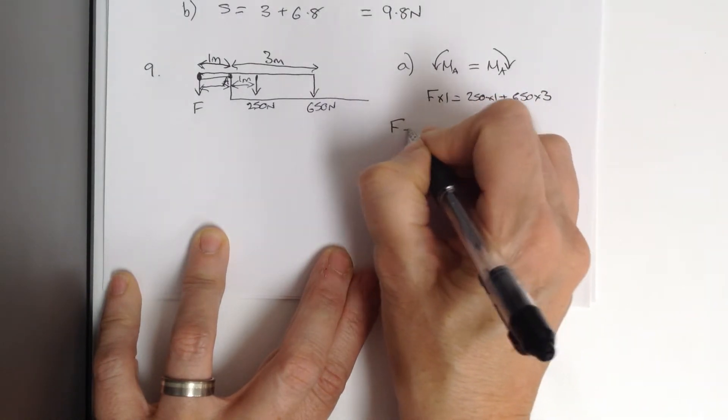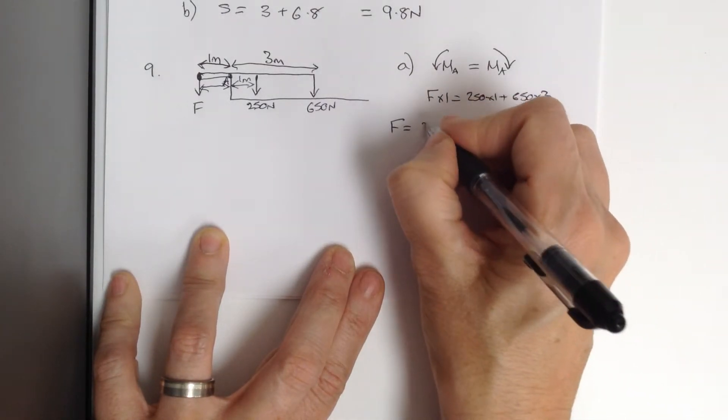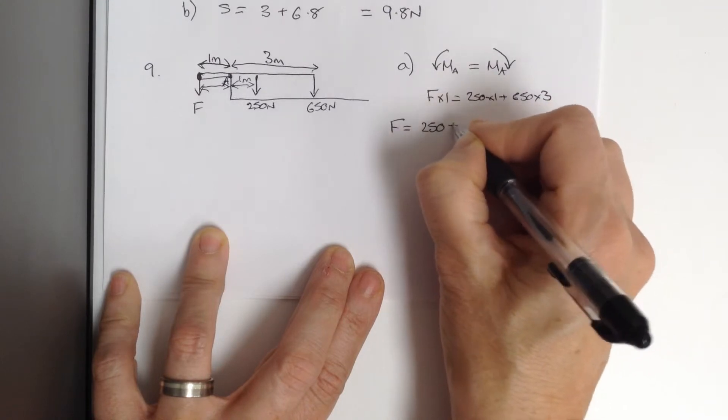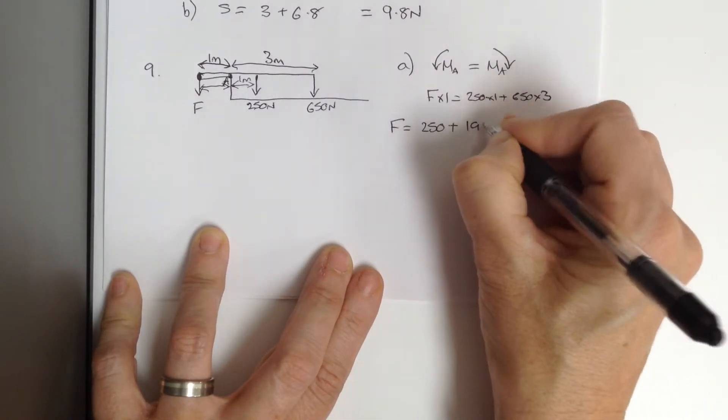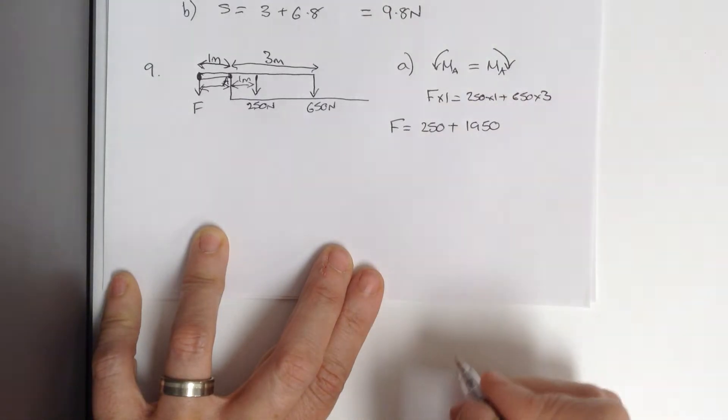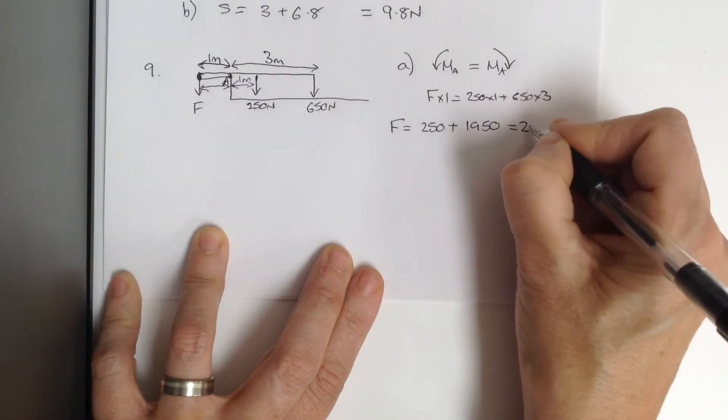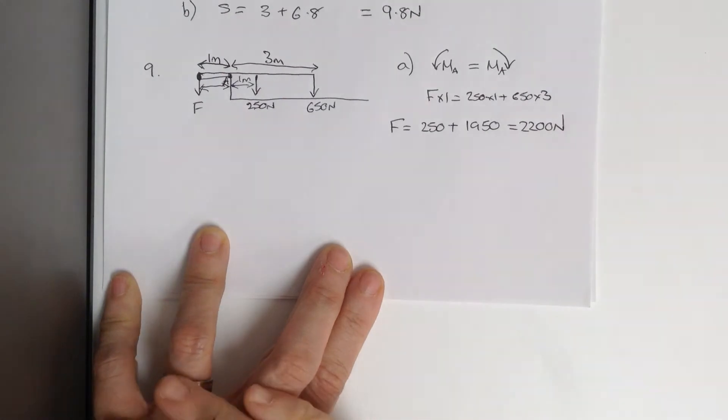So, that will give us an equation that says F is 250 plus, well, 650 times three is 1950, which is equal to 2200 newtons.